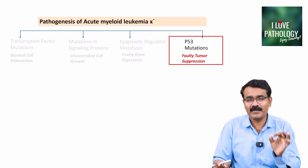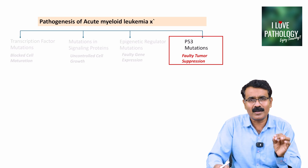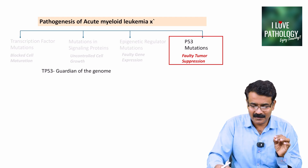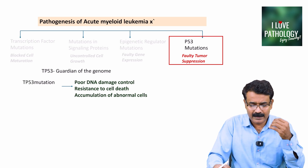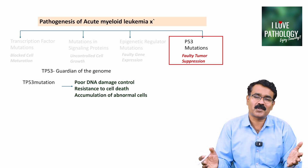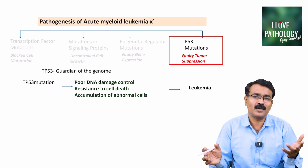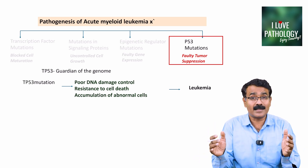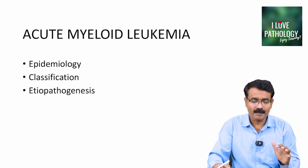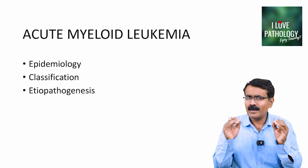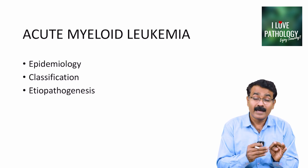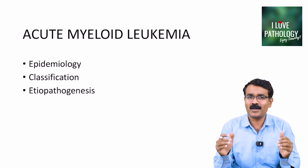The last one is TP53 mutations — faulty tumor suppression. TP53 is the guardian of the genome. When there is mutation of TP53, there is poor DNA damage control, resistance to cell death, and accumulation of abnormal cells leading to acute leukemia. So this is essentially the pathogenetic mechanisms of acute myeloid leukemia. Remember all four kinds of mutations. With this we have concluded the concepts of epidemiology, classification, and etiopathogenesis of acute myeloid leukemia.